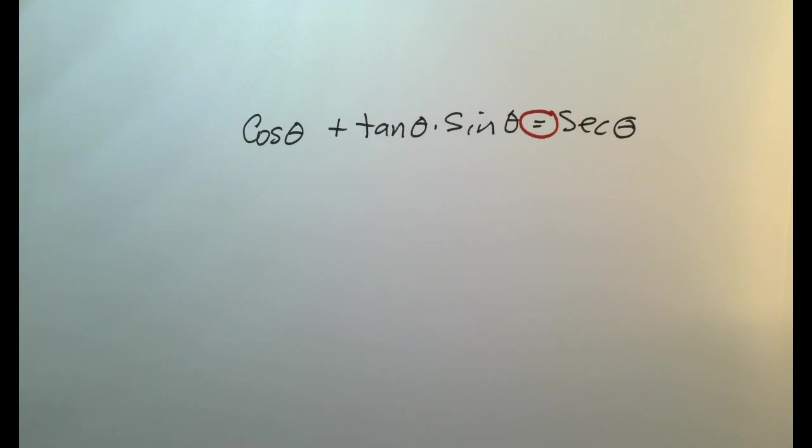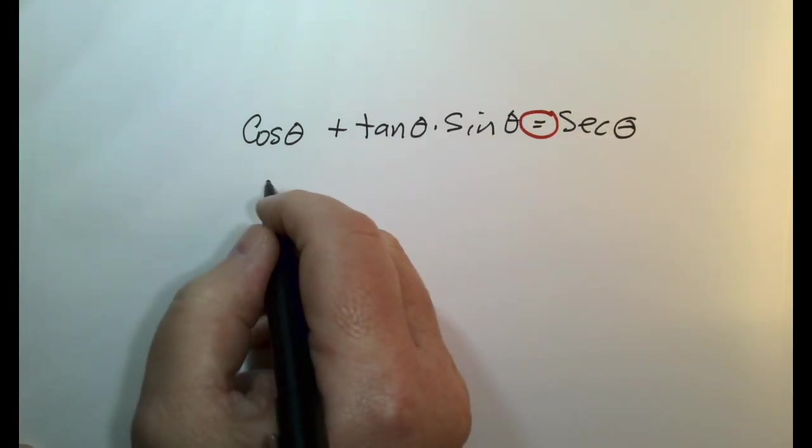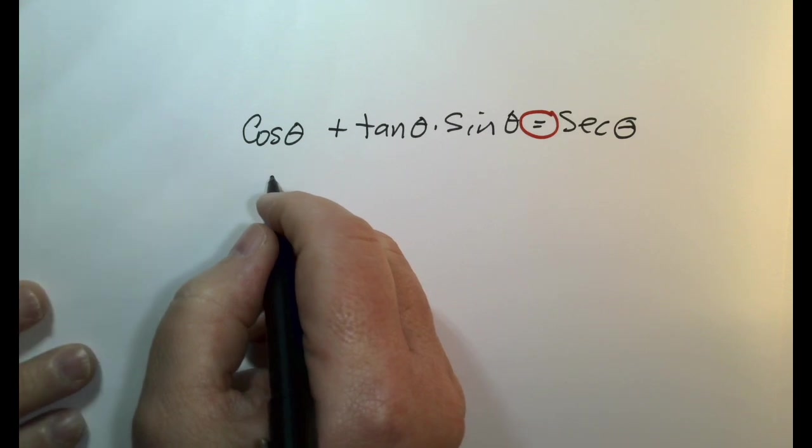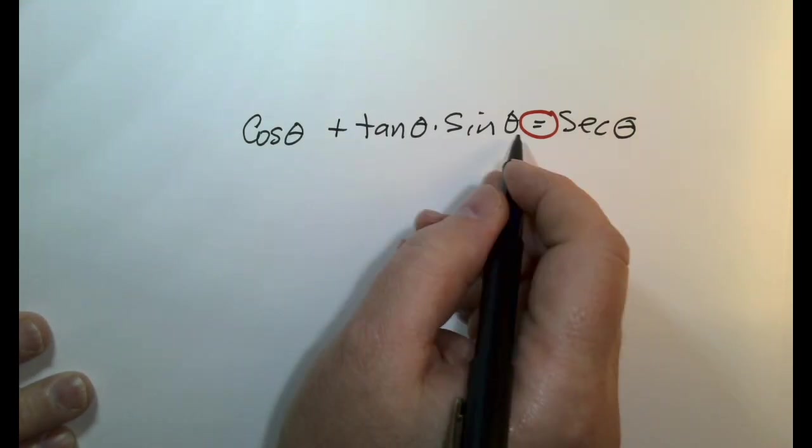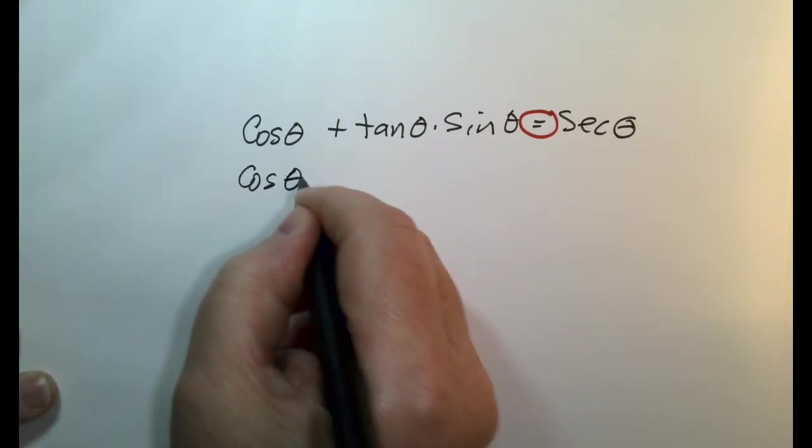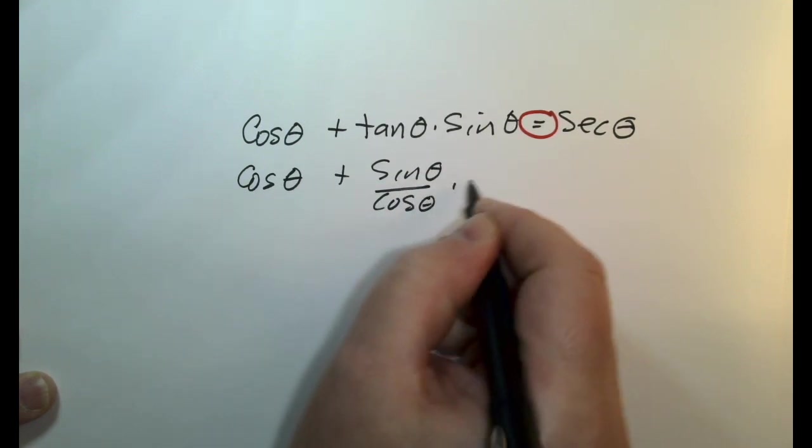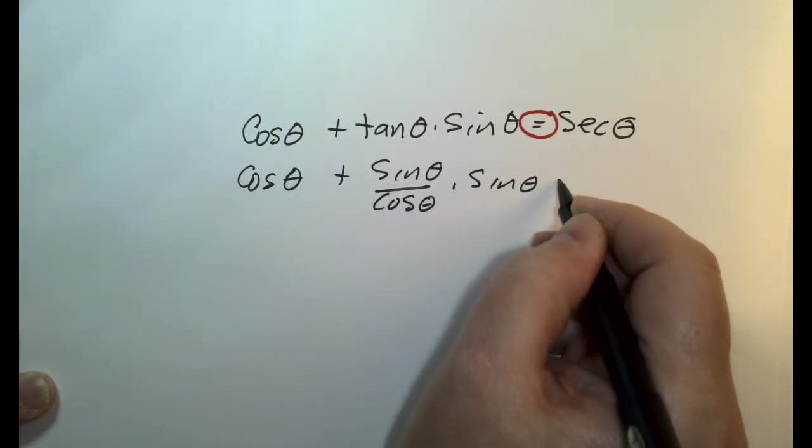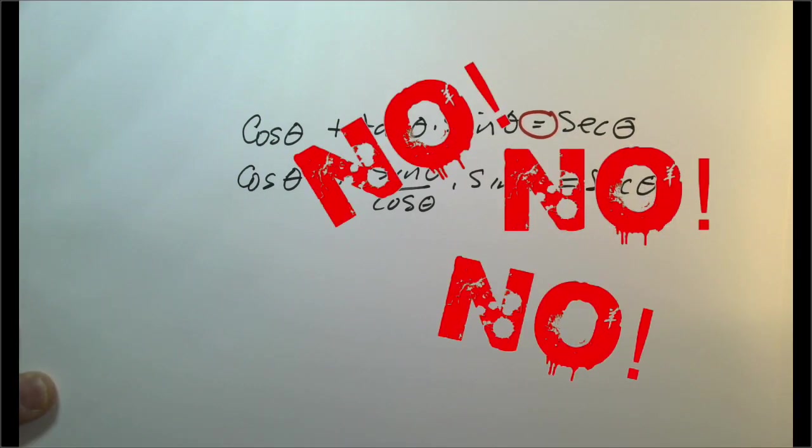Now, one of the common mistakes that is done is that you will see people do this. They will write the whole thing down again, and maybe in the next step they will convert this: cosine theta plus sine theta over cosine theta times sine theta equals secant theta. Now, why is this wrong?